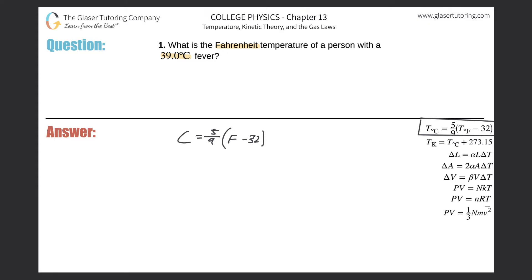So I need to figure out Fahrenheit, and we can algebraically manipulate this. Simply take the 5 ninths and move it down into the denominator on the left hand side. So this would be C over 5 ninths, and that will then be equal to F minus 32. So then we just got to add the 32 on over to the left hand side.